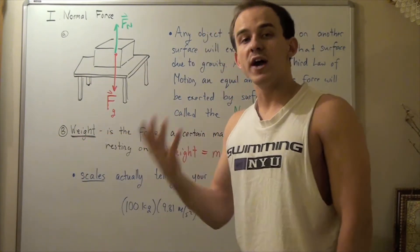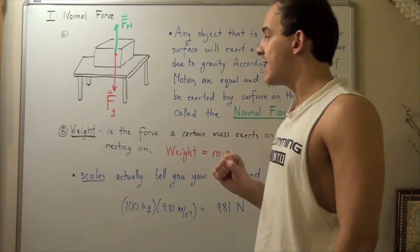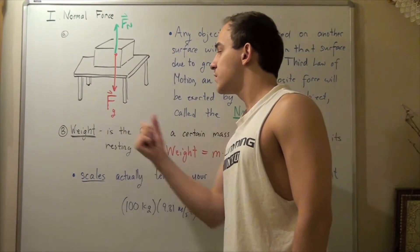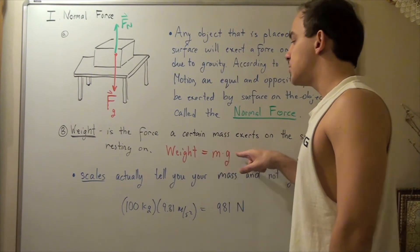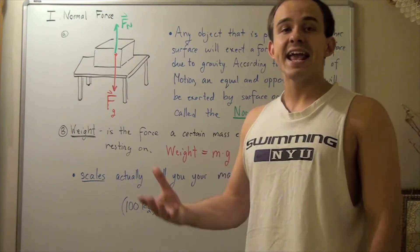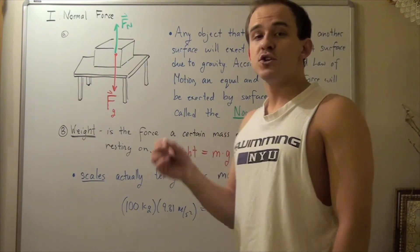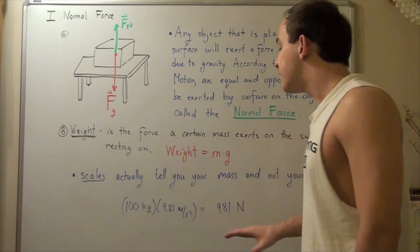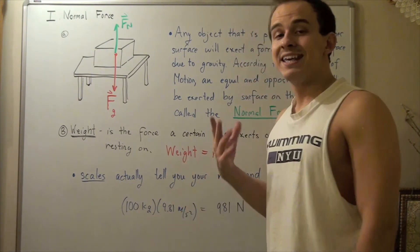Now let's talk about weight. Weight is the force a certain mass exerts on the surface it's resting on. In this case, our weight is the force due to gravity — so the force that the box exerts on the table is our weight, always given by m times g. Note that scales actually tell you your mass and not your weight. For example, if the scale reads 100 kilograms, your weight is actually 981 newtons. The scale calculates your mass by first measuring the force you exert on it and then dividing by 9.81.